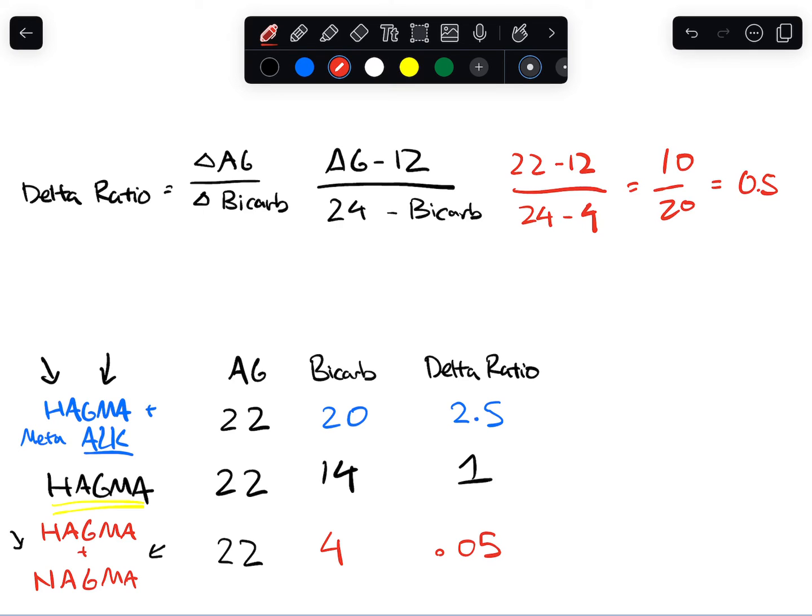So now you see a high delta ratio suggests a secondary metabolic alkalosis and a low one suggests a secondary acidotic process.